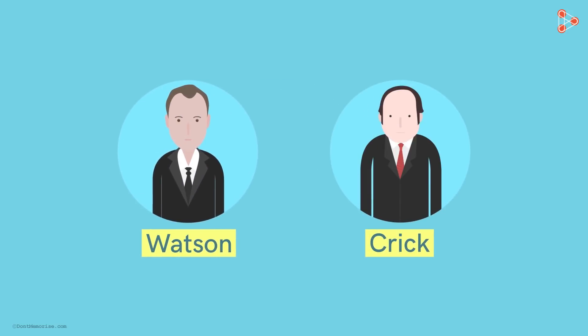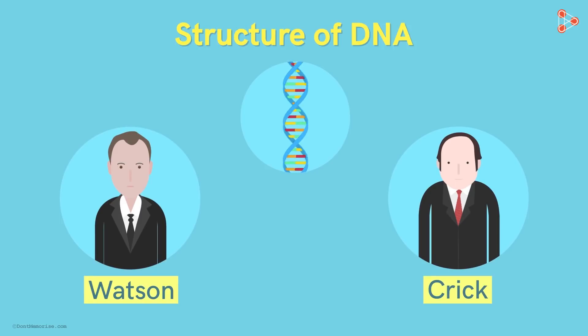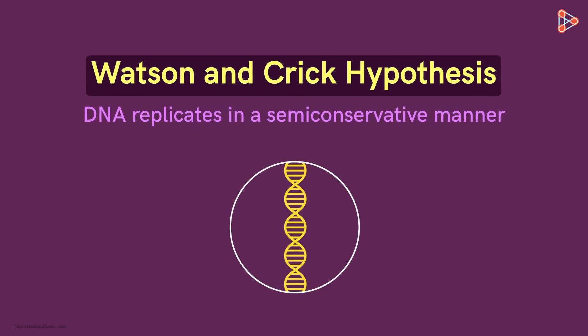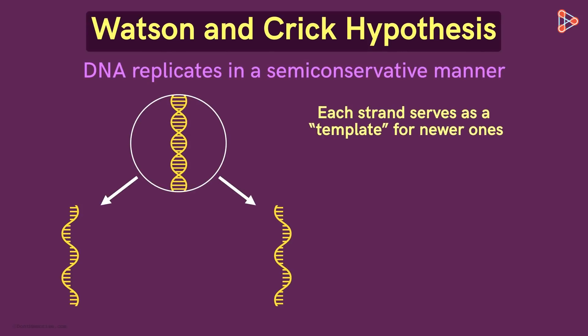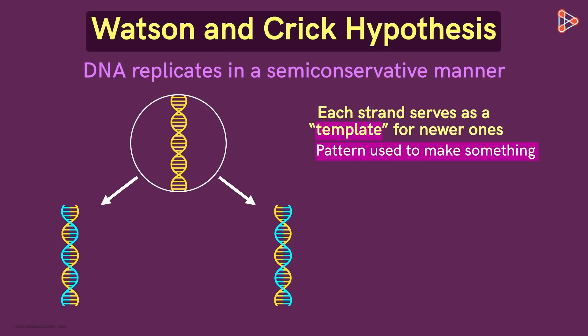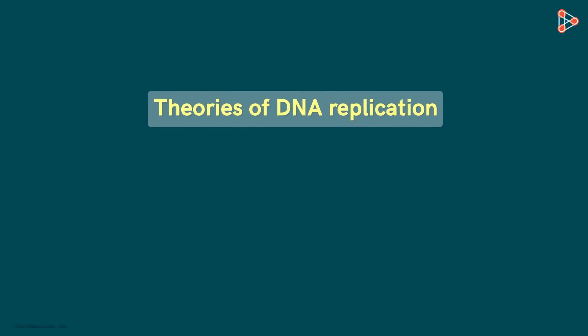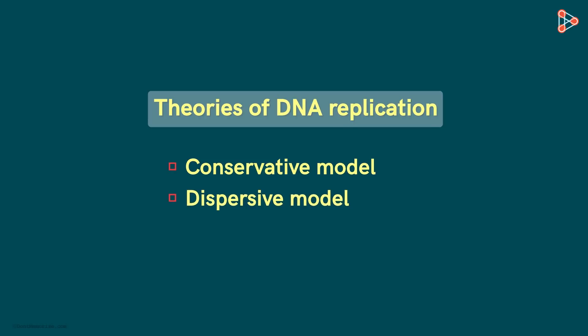After Watson and Crick came up with their hypothesis regarding the structure of DNA, the scientific world was curious to know how it could be replicated. They put forth a hypothesis that DNA replicates in a semi-conservative manner — both strands separate and each serves as a template for the synthesis of new strands. However, the scientific world was not ready to accept this easily, so three theories were put forth: the conservative model, the dispersive model, and the semi-conservative model.